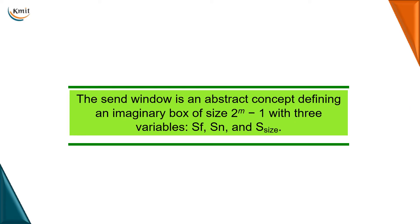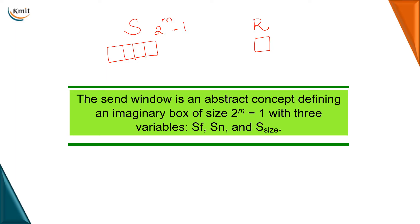Go-Back-N and Selective Repeat work on the principle of a sliding window. Both the sender and receiver have a window consisting of some frames. In Go-Back-N ARQ, the size of the sender window is 2^m − 1 frames. For example, if m = 2, the window holds 2^2 − 1 = 3 frames: 0, 1, 2. The receiver window size is always 1.